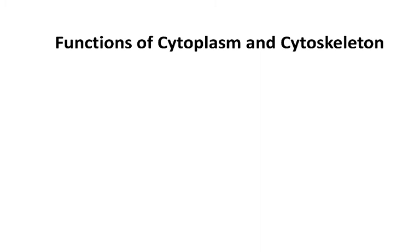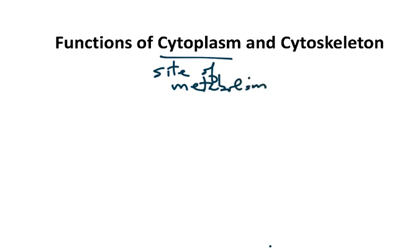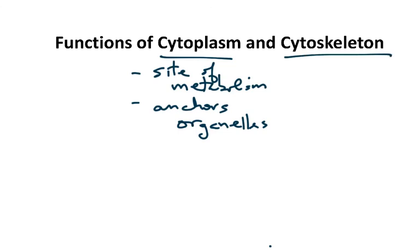So, functions of the cytoplasm and the cytoskeleton: the cytoplasm — or really the cytosol — is the site of metabolism. It anchors the organelles, which is what we're going to talk about in the next video. The cytoskeleton is involved in a number of different types of movement, and extensions of the cytoskeleton are involved in connections or junctions between cells.